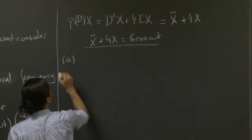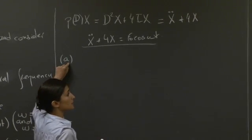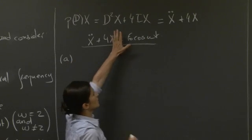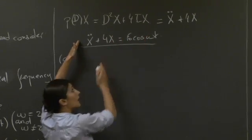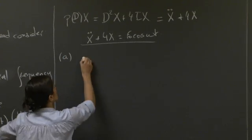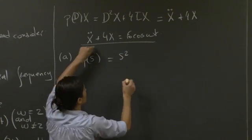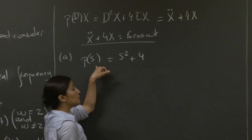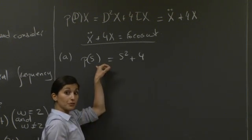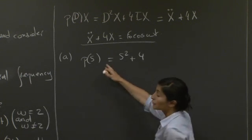OK, so the first question asks us for the natural frequency of the system. The natural frequency of this system can be found regardless of what you have on the right-hand side, just by looking at the characteristic polynomial of your equation. The characteristic polynomial here would be s squared plus 4. When this characteristic polynomial equals 0, we can solve for s and find what are the natural frequencies of the system if